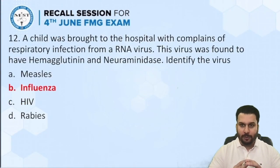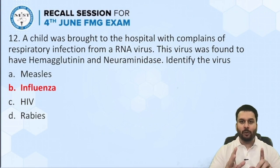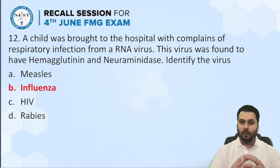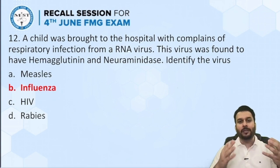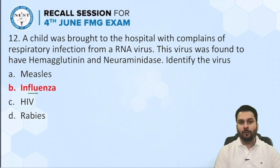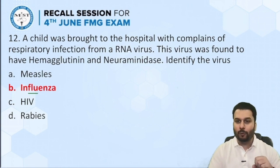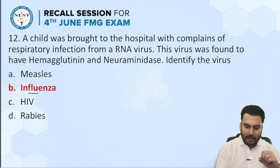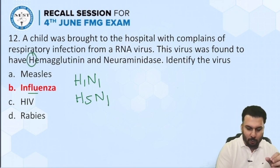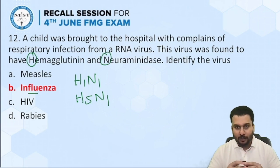Next question: a child was brought to the hospital with complaints of respiratory infection from an RNA virus. The virus was found to have hemagglutinin and neuraminidase — identify the virus. You all probably know these structures are present in the influenza virus. The word influenza contains 'flu' — for example bird flu and swine flu. These are denoted H1N1 and H5N1, where H stands for hemagglutinin and N for neuraminidase.